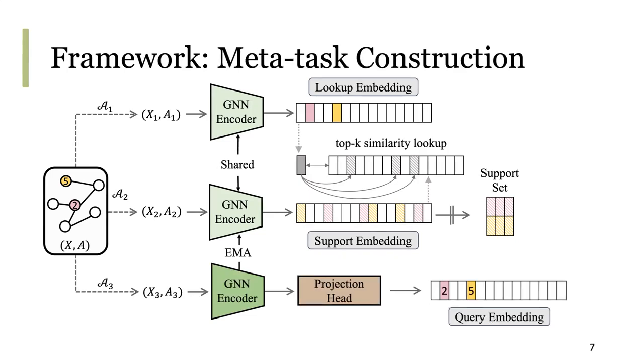To complete our meta-task construction, we perform a third data augmentation. This generates a new set of embeddings, the query embedding. From this set, we use the embeddings for node 2 and node 5 to build our query set.